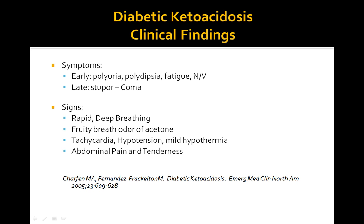Patients also present with changes in mental status ranging from somnolence to stupor, and finally coma in late stages. The ketosis in DKA is due to the inability to utilize glucose, leading to mobilization and oxidation of fatty acids, increased substrates for ketogenesis, and a ketogenic state of the liver, all resulting in decreased ketone clearance. The two key mechanisms are decreased clearance and increased substrate for ketogenesis.